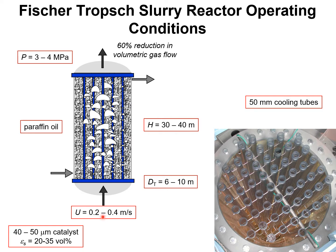Another important factor for bubble column hydrodynamics is that the syngas entering the reactor suffers a reduction in volume because it is converted to hydrocarbons. There is about a 60% reduction in the volumetric flow rate of the gas as it passes up the column.